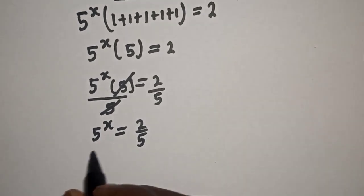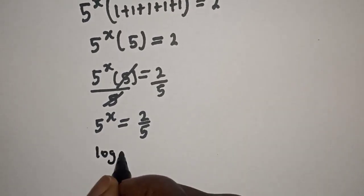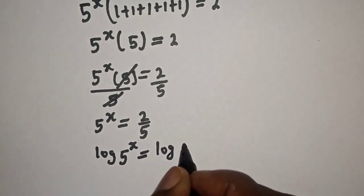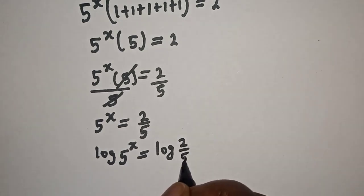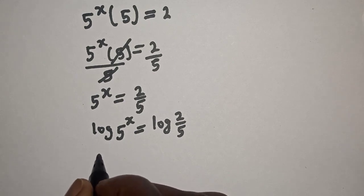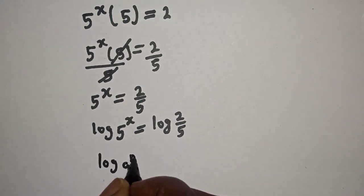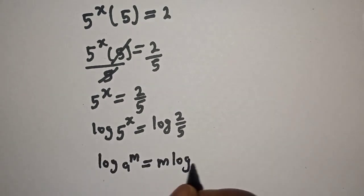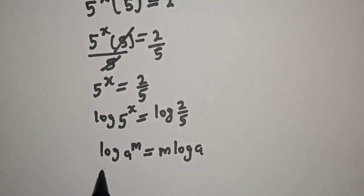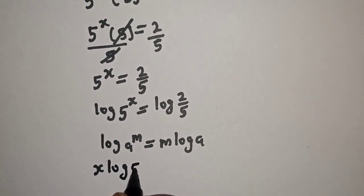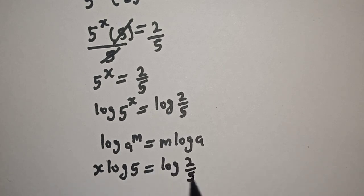Let's take the log of both sides. Log 5 raised to power s is equal to log(2/5). Using the power rule: log(a^m) = m·log(a), so this becomes s·log 5 is equal to log(2/5).